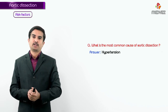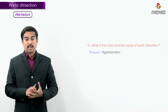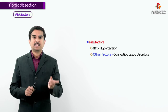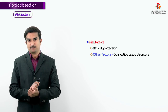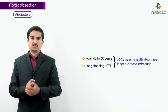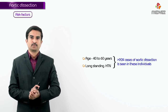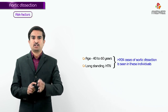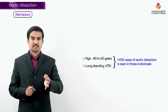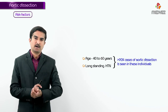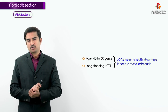Hypertension is the most important and most common risk factor of aortic dissection. Other risk factors include connective tissue disorders, which can weaken the vessel wall by affecting collagen fibers. If you see a patient between 40 to 60 years old with long-standing hypertension, greater than 90 percent of aortic dissection cases are these individuals.